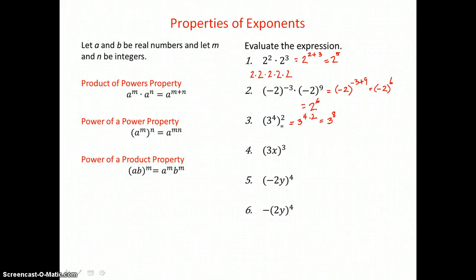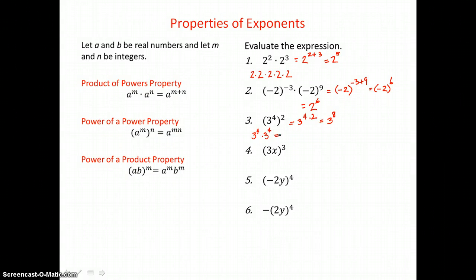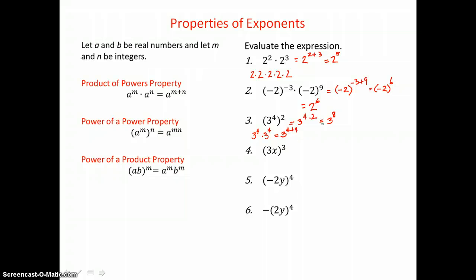I can show this again by expanding, because I have 2 factors of 3 to the 4th power. My product of powers property says if I'm multiplying like bases, I can add exponents. So again, we end up with 3 to the 8th power.